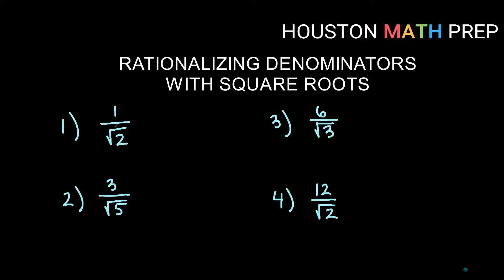In the first example, I have one divided by square root of two. Remember that we are going to rationalize the denominator by multiplying by whatever root is in the bottom. We're going to do that on the top of the fraction and the bottom of the fraction. If we don't do it to both pieces, we are changing what we started with — we want to keep the same value, just written in a different form. So one times root two on the top gives us root two.